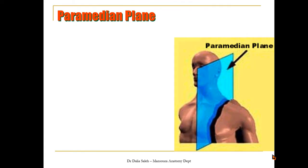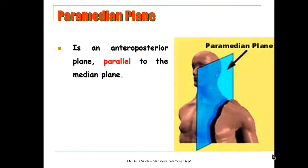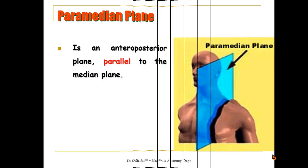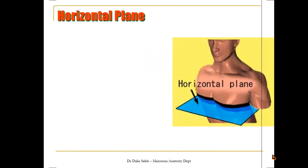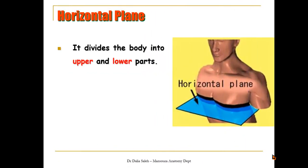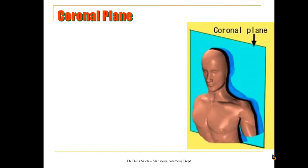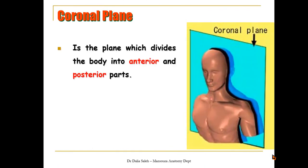The paramedian plane is another anteroposterior plane that lies parallel to the median plane and cuts the body into unequal right and left parts. The horizontal plane divides the body into upper and lower parts, while the coronal plane divides the body into anterior and posterior parts.